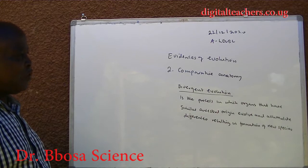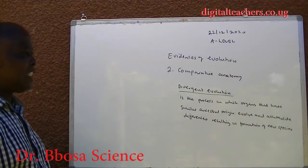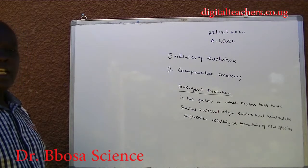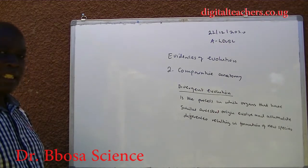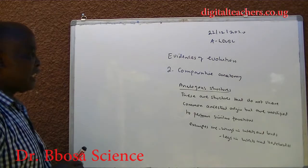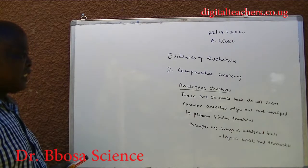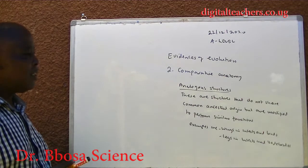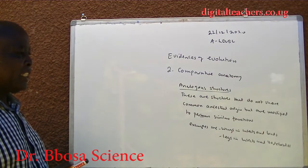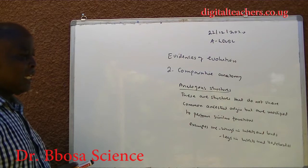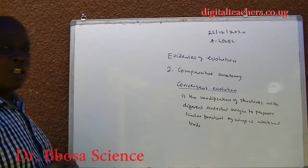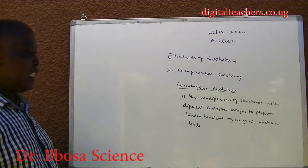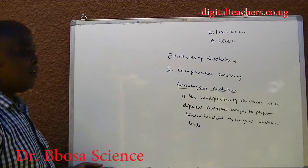Divergent evolution is the process in which organisms that have similar ancestral organs evolve and accumulate differences, resulting in the formation of new species. Analogous structures are structures that do not share common ancestral origins but are modified to perform similar functions. For example, wings in insects and birds, and legs in insects and vertebrates.